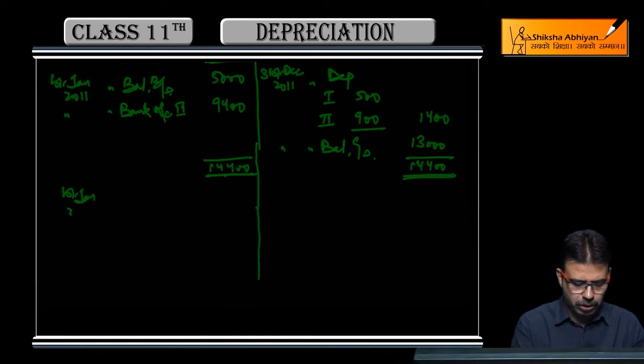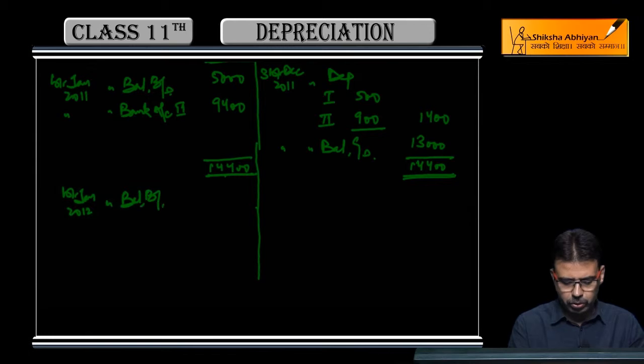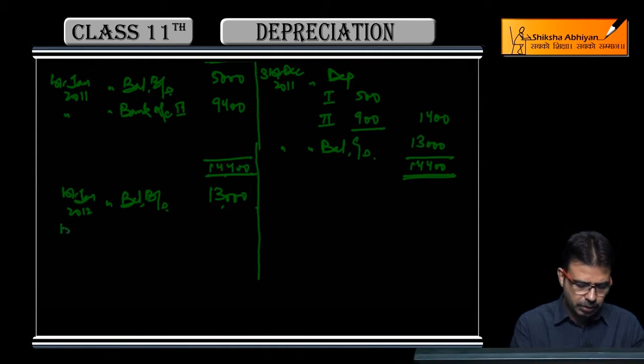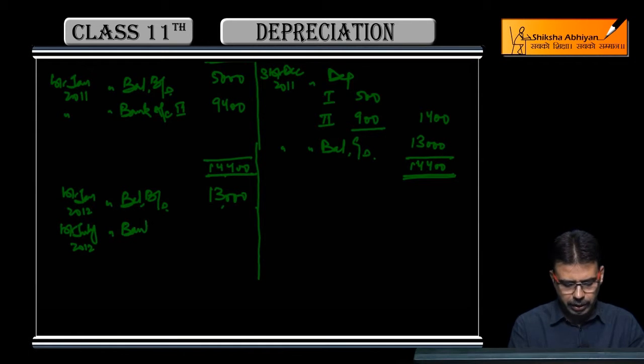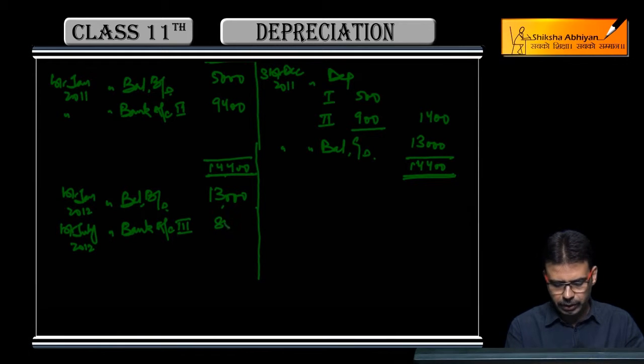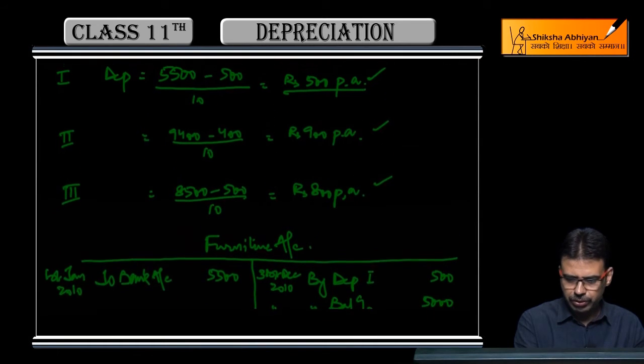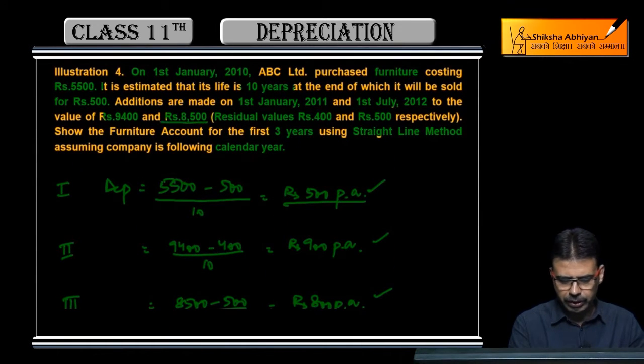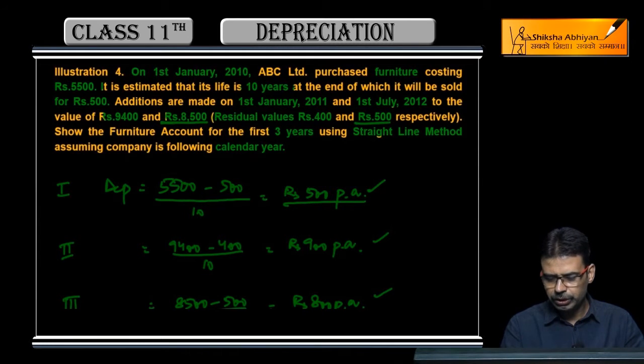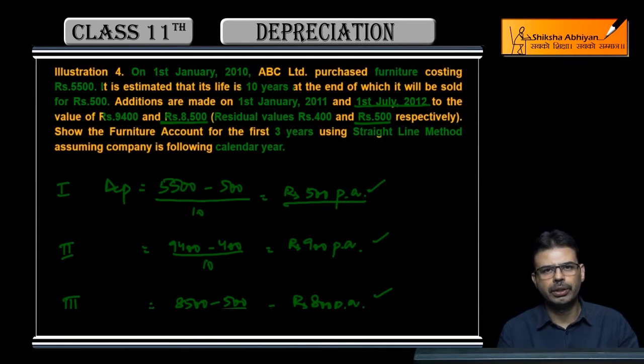1st January 2012, we have reached the third year, and I carried forward Balance Brought Down Rs. 13,000. This year on 1st July, we purchased the third furniture for Rs. 8,500. Let me show you again—this Rs. 8,500, here it is, was purchased on 1st July.